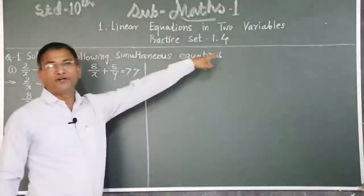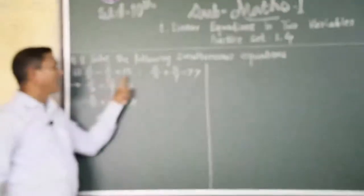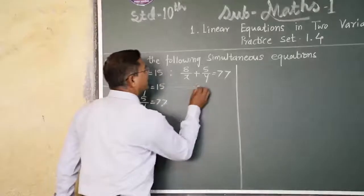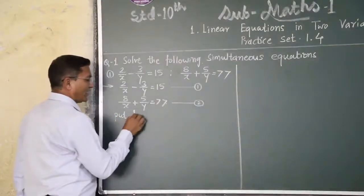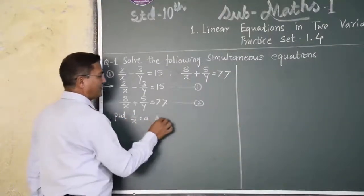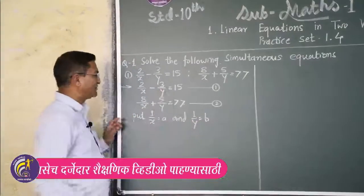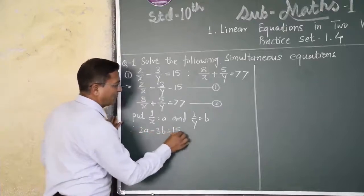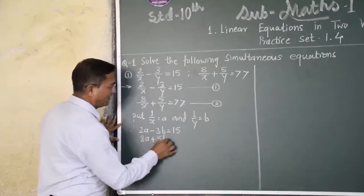Now practicing with Practice Set 1.4. Question one: solve the following simultaneous equations. First equation is 2 upon x minus 3 upon y is equal to 15, and second equation is 8 upon x plus 5 upon y is equal to 77. We substitute: let 1 upon x equal to a, and 1 upon y equal to b. Equation one becomes 2a minus 3b equal to 15, and equation two becomes 8a plus 5b equal to 77.